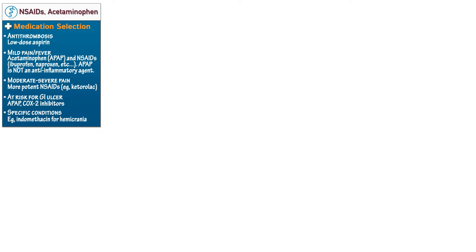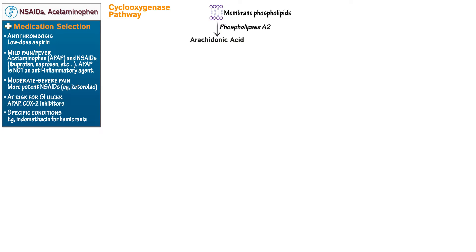Let's begin our diagram with a review of a section of the cyclooxygenase pathway. First, draw a section of membrane phospholipids. Membrane phospholipids are broken down by phospholipase A2 to arachidonic acid. Then show that arachidonic acid is converted to prostaglandin H2 (PGH2) via cyclooxygenase 1 and cyclooxygenase 2.